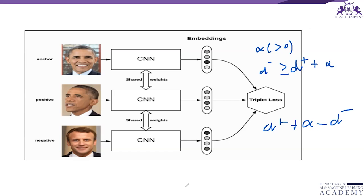After training the Siamese network using triplet loss, we can use the network for one-shot prediction. We are given a support set — where the classes are not contained in the training set — and a query image belonging to one of the classes in the support set. We classify the query image by comparing it with all images in the support set.